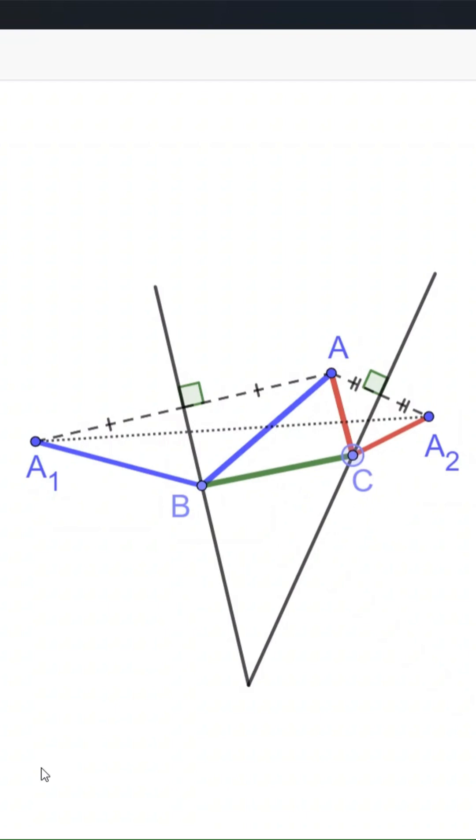So the perimeter of the triangle is equal to the sum of the three segments connecting A1 and A2, which is less than the direct distance from A1 to A2. When B and C are placed at the intersections, minimum perimeter is achieved.